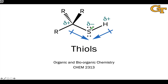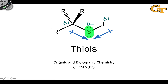We're now going to turn our attention to the thiols, which are sulfur analogs of alcohols. Notice that in this general drawing of a thiol, the only difference between this and an alcohol is the presence of a sulfur where we saw an oxygen atom previously. So in that sense, thiols are structurally analogous to alcohols.